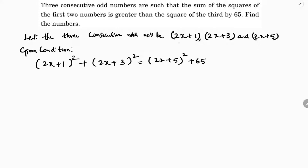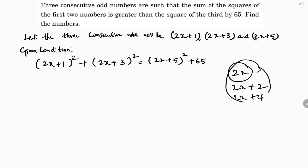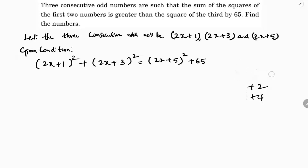Note: if the problem were about even numbers, we would take 2x, 2x+2, 2x+4. Here they said odd, so we take 2x+1. Each squared term is in the form (a+b)² = a²+2ab+b².